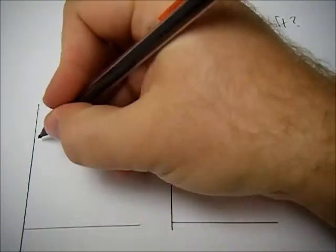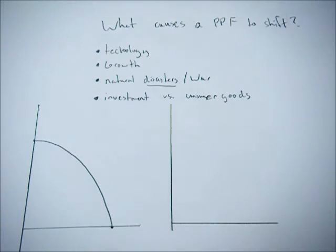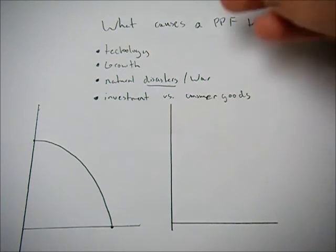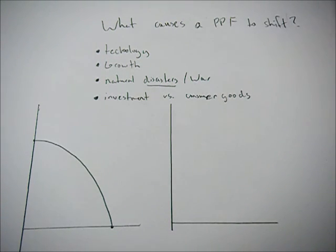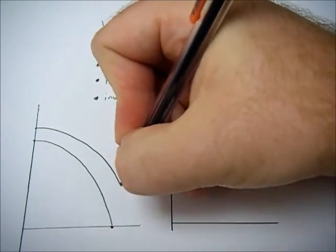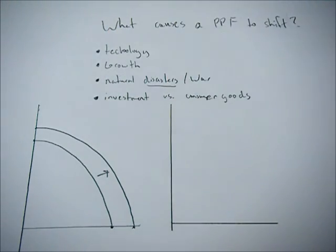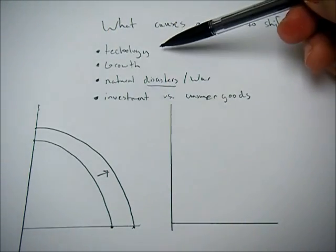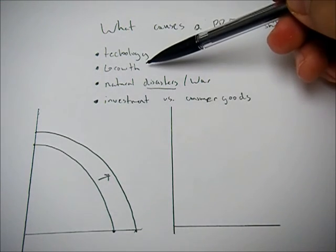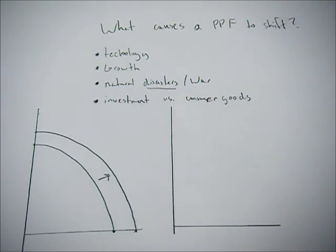So remember that when we draw our typical PPF, it's a snapshot in time. So we're holding everything else constant. But if in the next time period, say tomorrow or a year from now, technology were to get better and we can produce more stuff, then we'll see our PPF shift out. What goods we're producing doesn't really matter at this point because technology as a whole has gotten better or there's been economic growth in the economy so we can produce more, this shifts out.